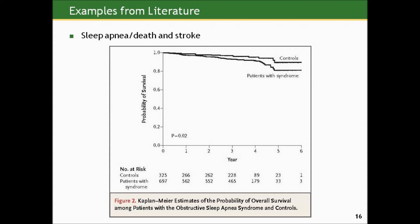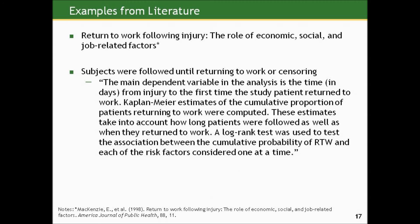Here's another example from the literature where the outcome of interest isn't death — it's return to work following injury. The outcome of interest is returning to work amongst people who were out of work because of a work-related injury, examining the role of economic, social, and job-related factors. Subjects who were out of work because of an injury sustained on the job were followed until returning to work or censoring.